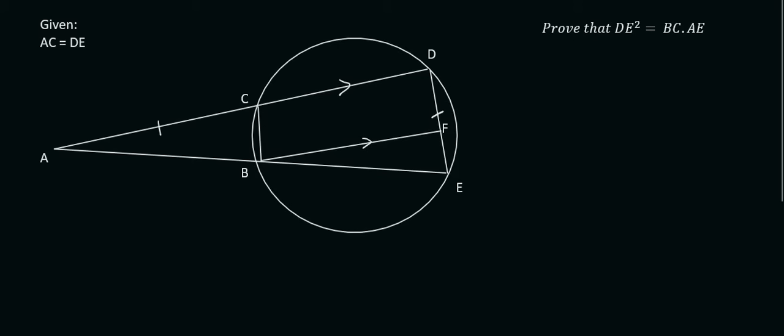In this question, we are given that the length of AC is the same as the length of DE. What we are asked to prove is the following. We should always start at the question. What we know is that it's not going to be proportionality, because there aren't any triangles that have this type of setup. So it's definitely going to be similarity.